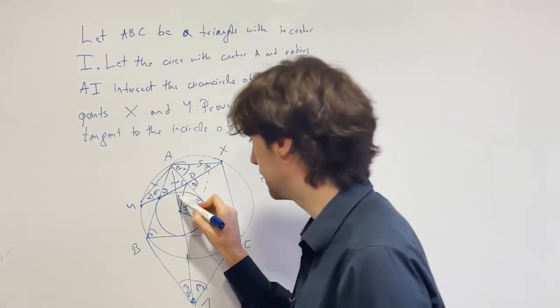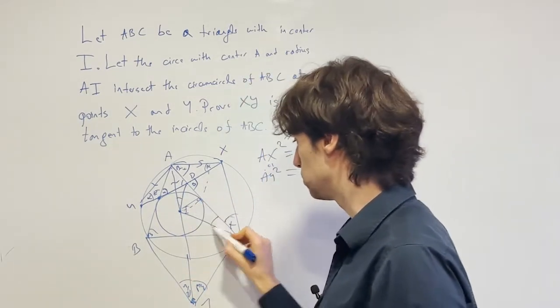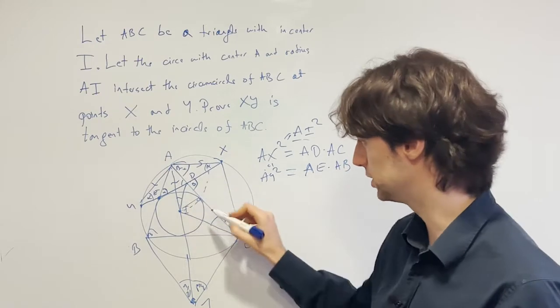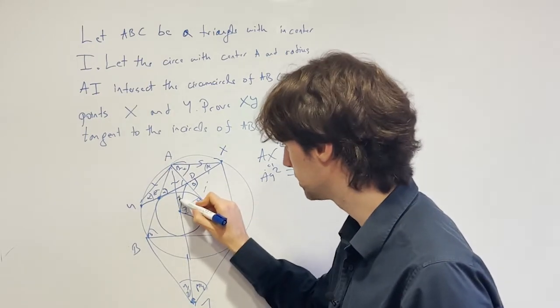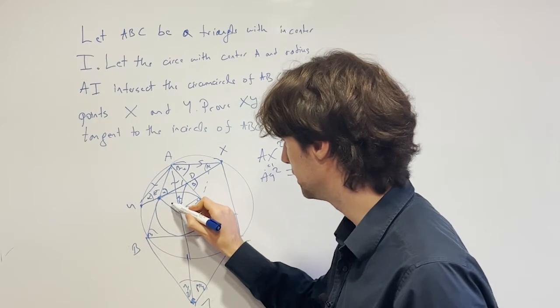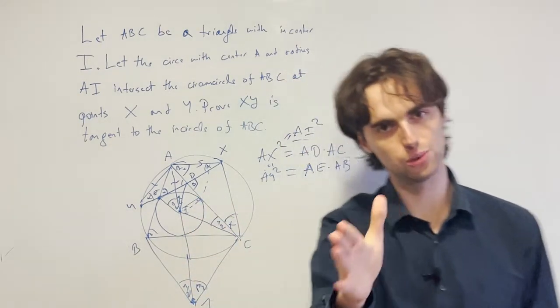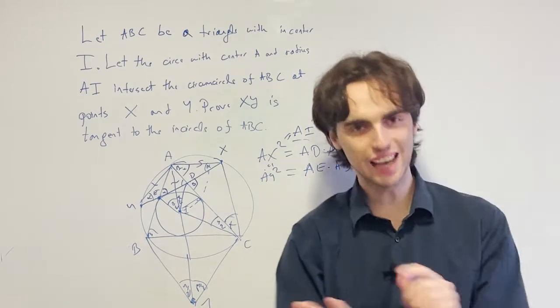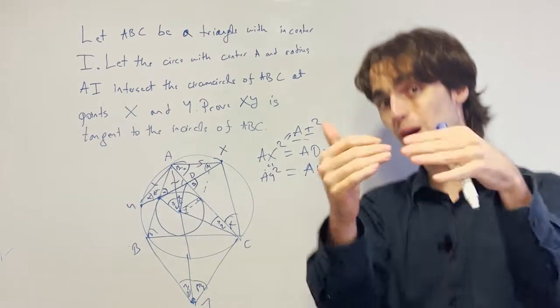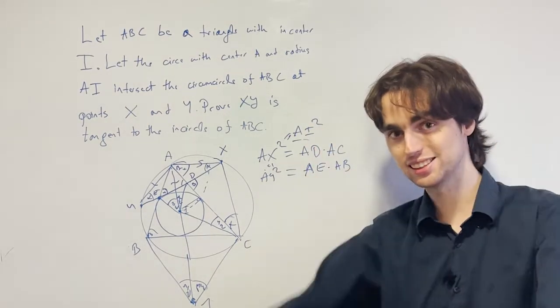And with this in mind, what do we have? We have that this angle right here is equal to this angle right here because of this tangency condition. And this is gamma half. So this is gamma half. And this angle here is beta half. And with this, I invite you to pause for another 10 to 15 minutes and see if you can push the problem further. And here's the next step.